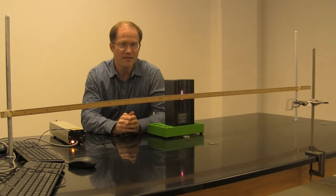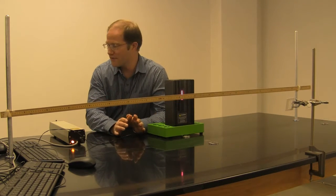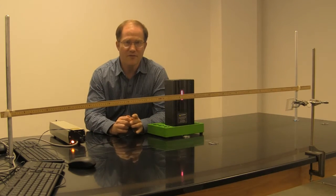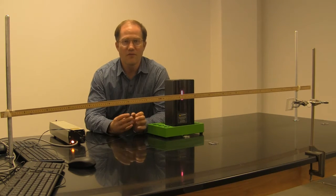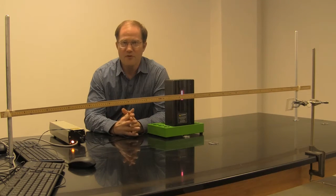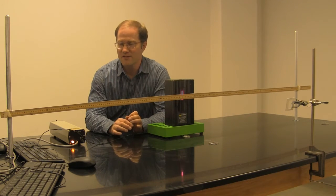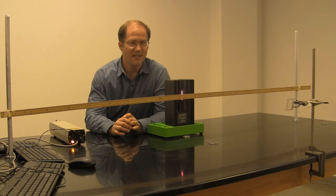When n is three, Balmer's formula gives you the corresponding wavelength for the red color emitted by hydrogen. When n is equal to four, the Balmer formula gives you the corresponding wavelength for the cyan color emitted by hydrogen.